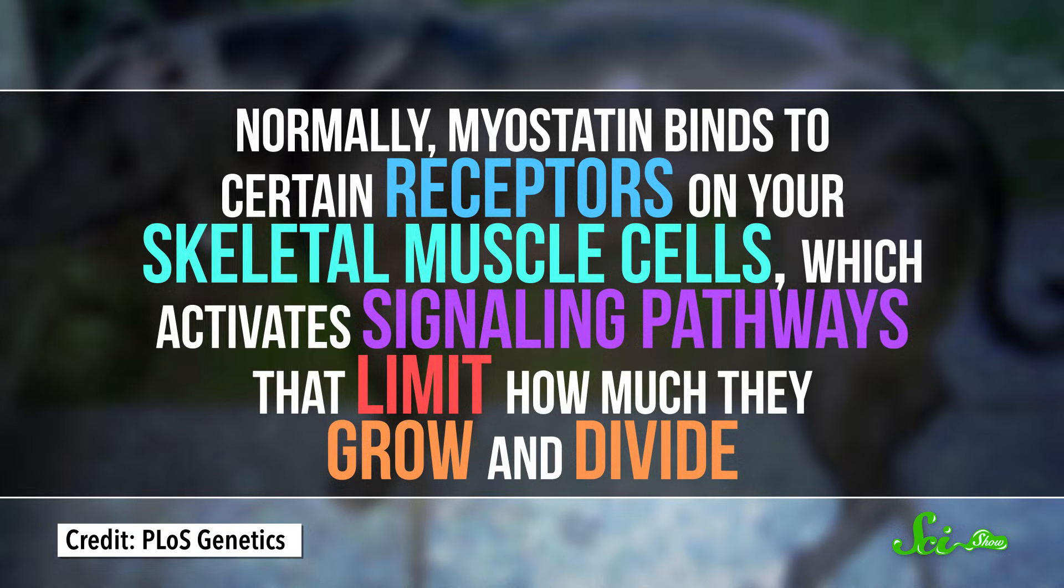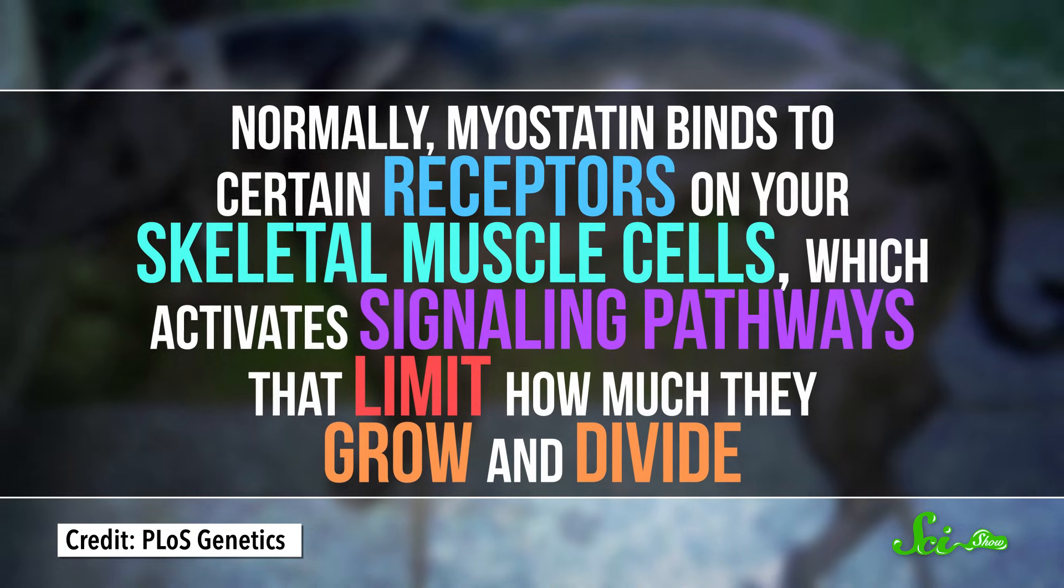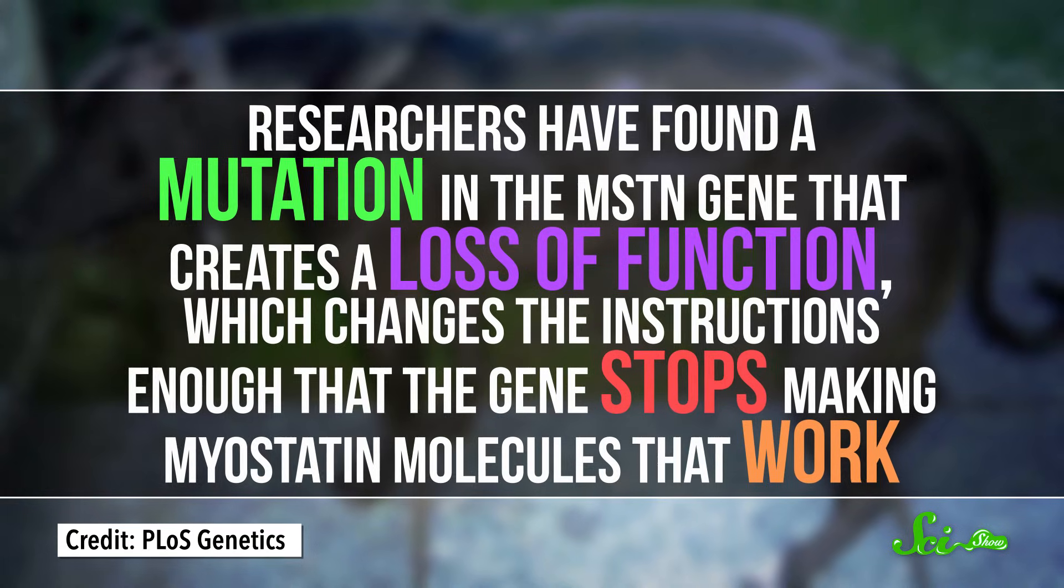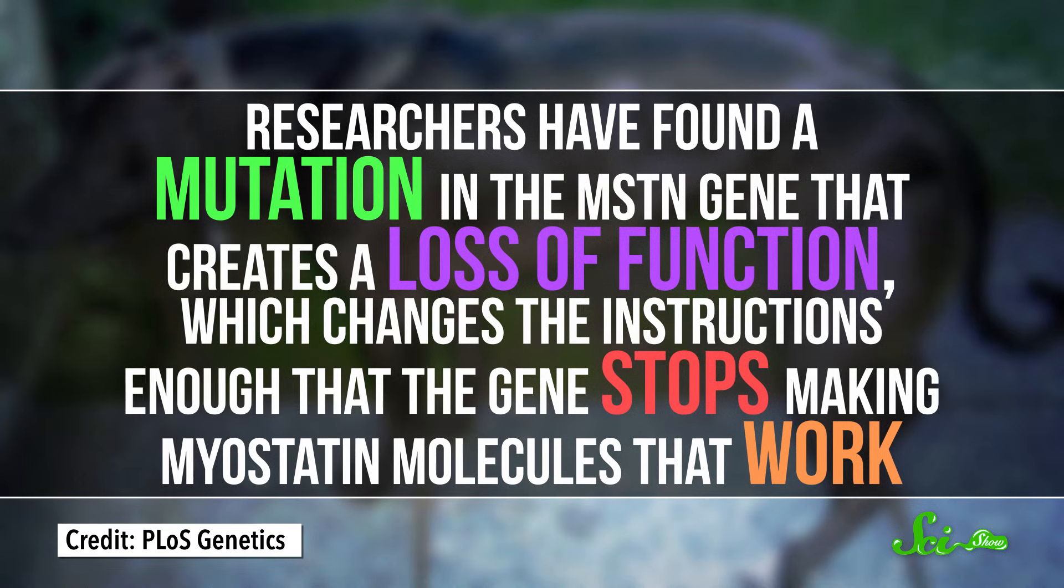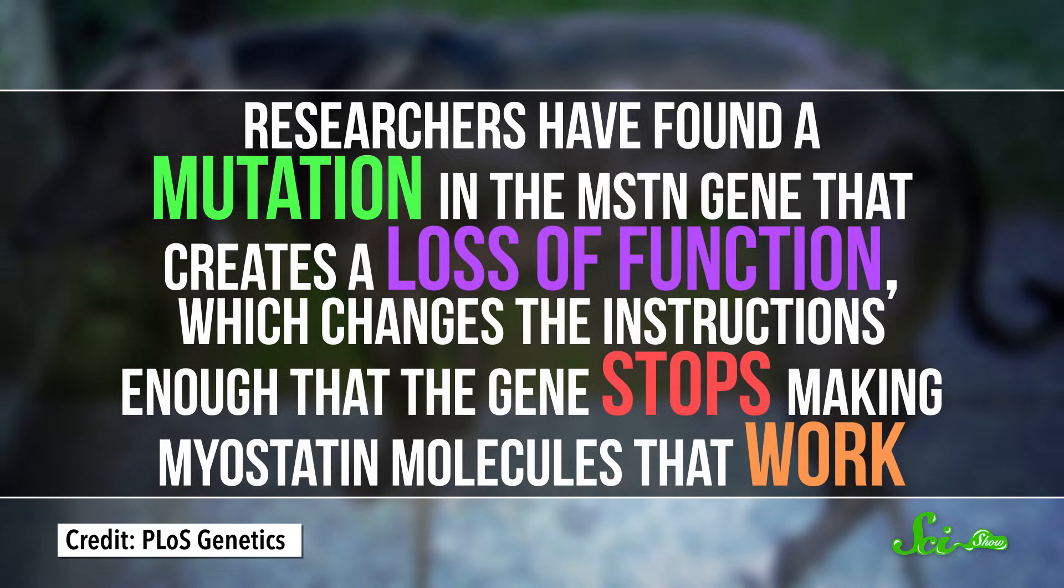Normally, myostatin binds to certain receptors on your skeletal muscle cells, which activate signaling pathways that limit how much they grow and divide. But researchers have found at least one mutation in the MSTN gene that creates a loss of function. It changes the instructions enough that the gene stops making myostatin molecules, or at least stops making proteins that work.